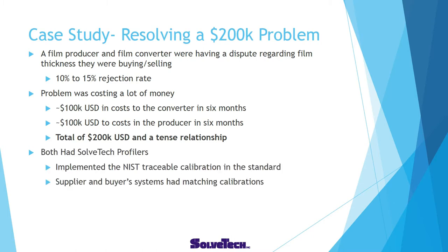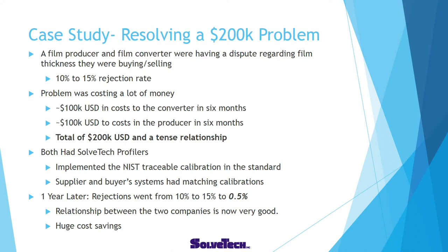Fortunately, both had SolvTech profilers and they called me to help. Before this was a formal standard, I implemented this standard for them and NIST traceably calibrated both of their instruments to match each other. Now that they were matching, they were on the same page — the supplier knew what thickness they were producing, and the converter could verify that on receipt. One year later, rejections went from 10-15% to 0.5% — a huge reduction — and the relationship between the two companies is now very good. The QC manager at the converter said, 'I can see the supplier's quality improving all the time.' The problem has essentially gone away.